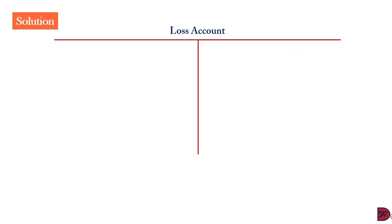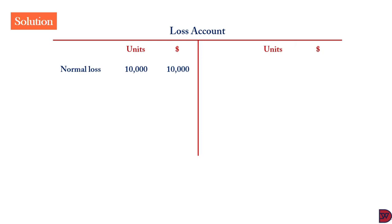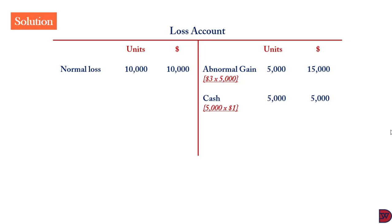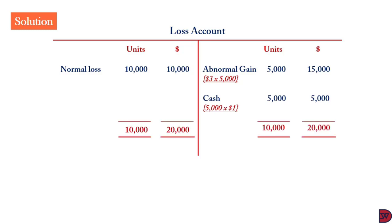In the loss account, we start with normal loss of 10,000 units at $10,000. Because abnormal gain has a credit balance, we bring in abnormal gain of 5,000 units at $15,000 (the $3 cost per unit multiplied by 5,000 units). Cash reflects only the 5,000 units actually lost at $1 scrap value, giving $5,000. The total gives 10,000 units and $20,000. Since the credit side exceeds the debit side, the difference of $10,000 moves to the income statement as a gain.